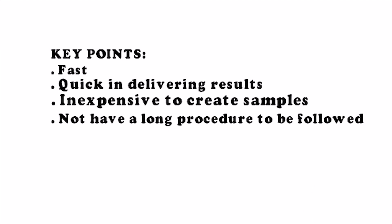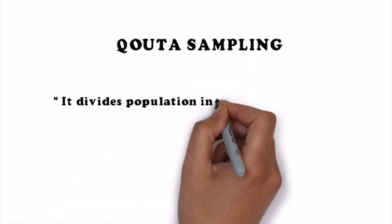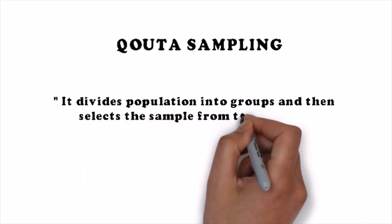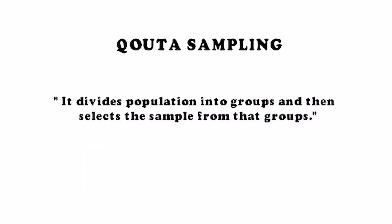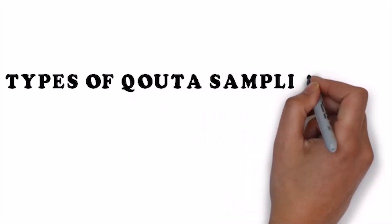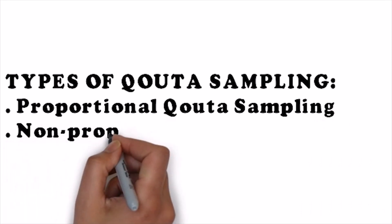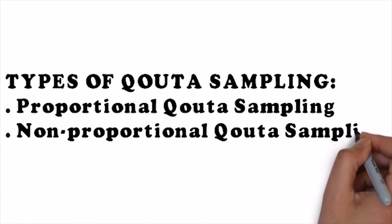Quota sampling is similar to stratified sampling except that there is no random selection in it. It divides the population into groups and then selects the sample from those groups. Like stratified sampling, quota sampling first divides the population into strata — also called quotas — and then selects samples from those strata. It also has two types: proportional quota sampling (also called controlled quota sampling) and non-proportional quota sampling (also called uncontrolled quota sampling).